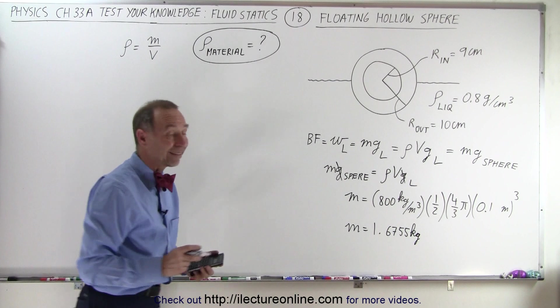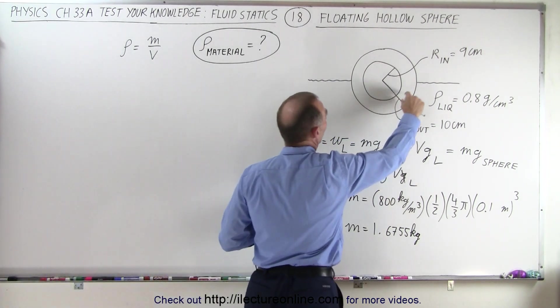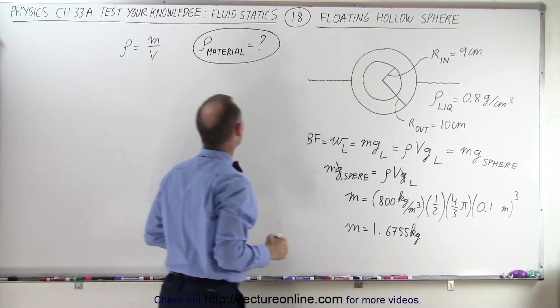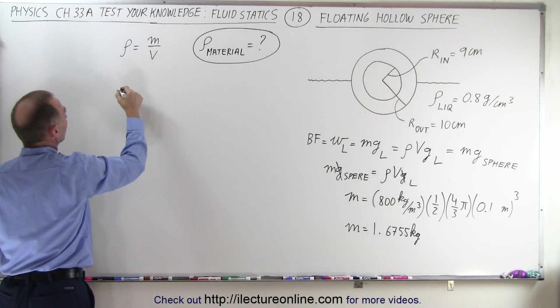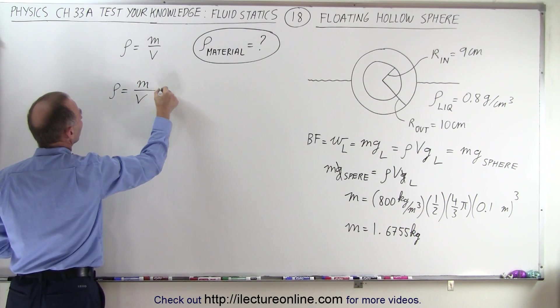All right, so that's the mass of the sphere. Now that would be the mass, of course, of this portion of the sphere, because it's a hollow sphere. Now we go over here. So we mean that the density is equal to the mass divided by the volume.